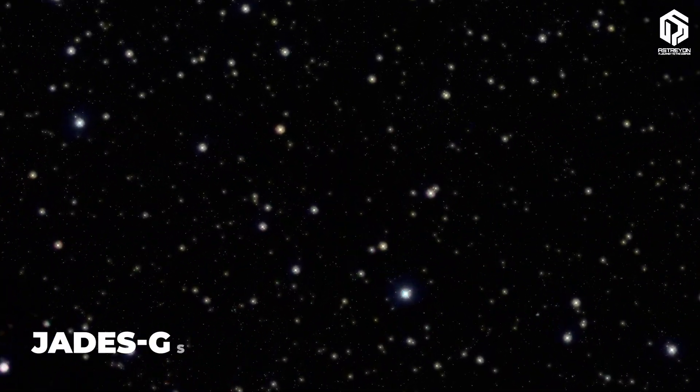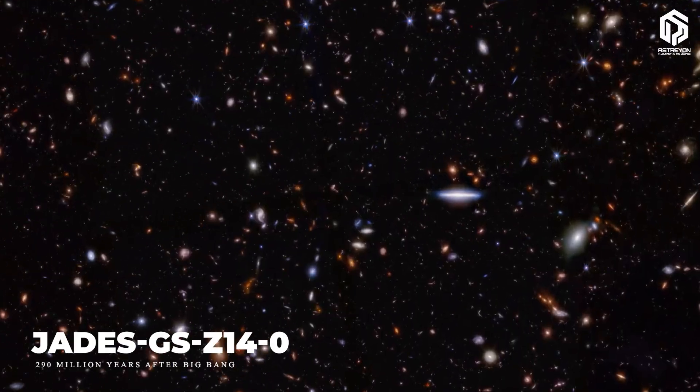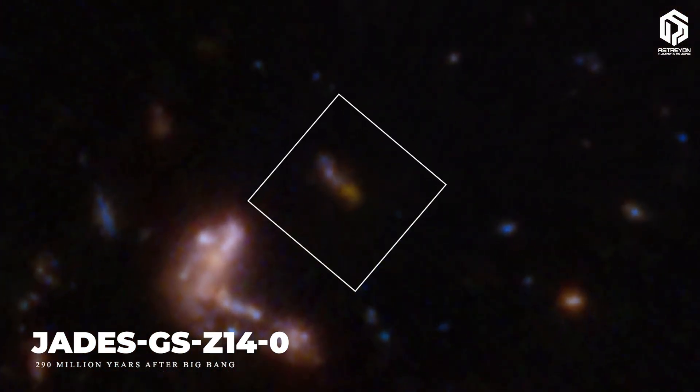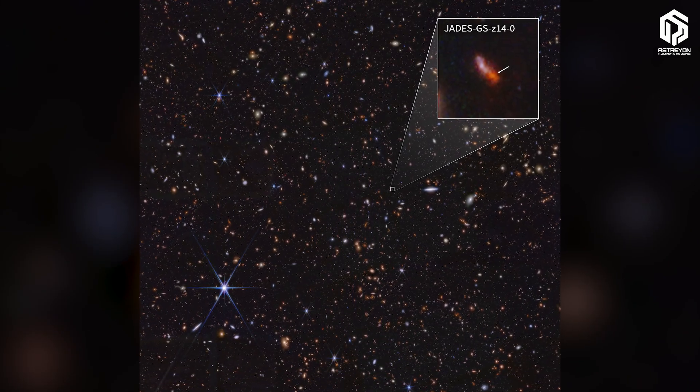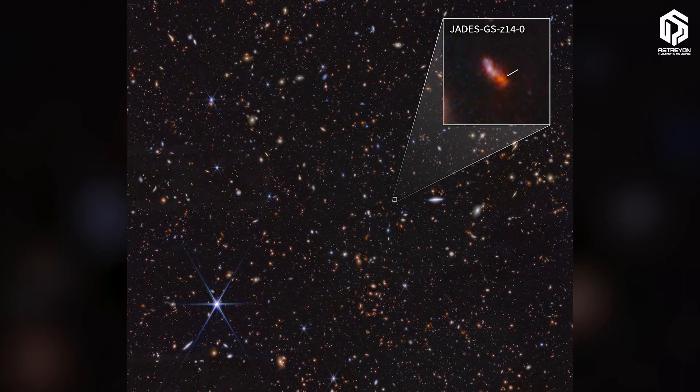A bit closer, but still ancient, JADES-GS-z14-0 has a redshift of 14.32, meaning its light has traveled over 13.5 billion years to reach us, about 290 million years after the Big Bang.